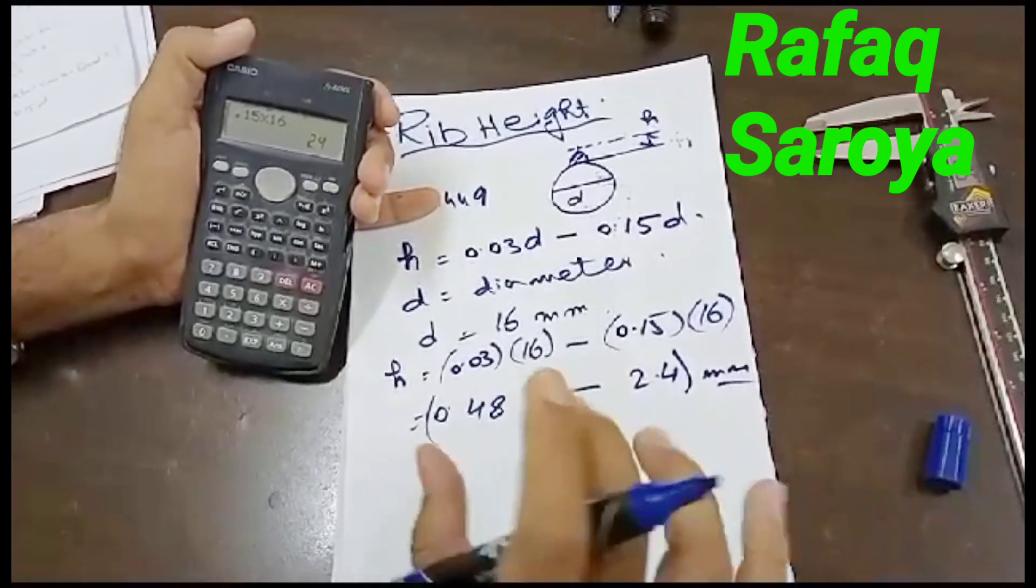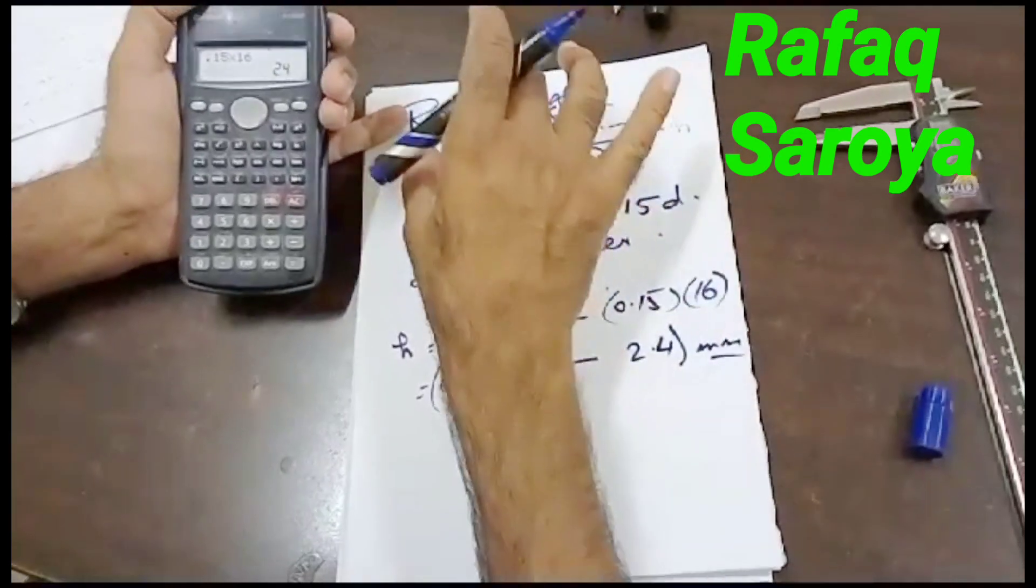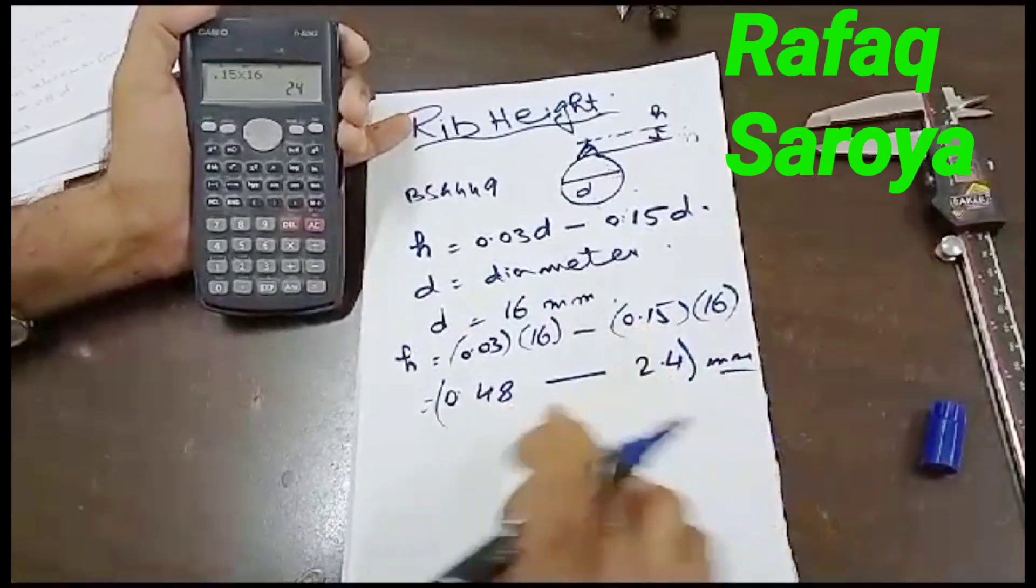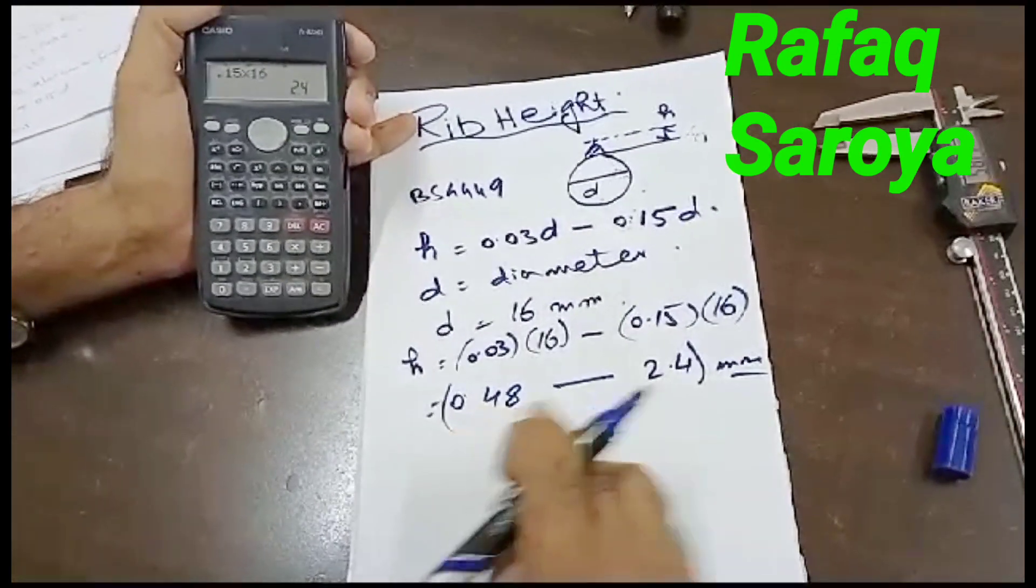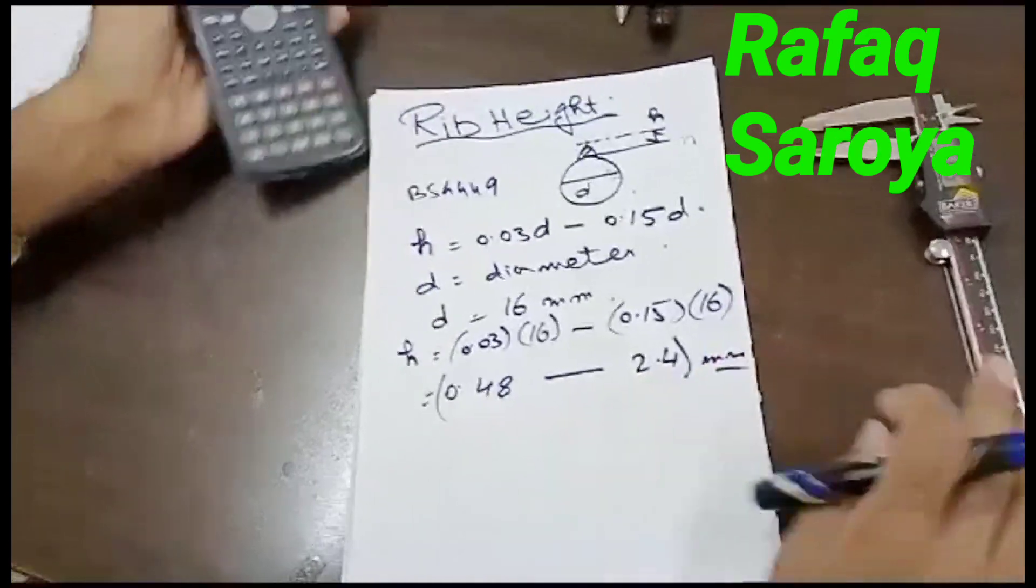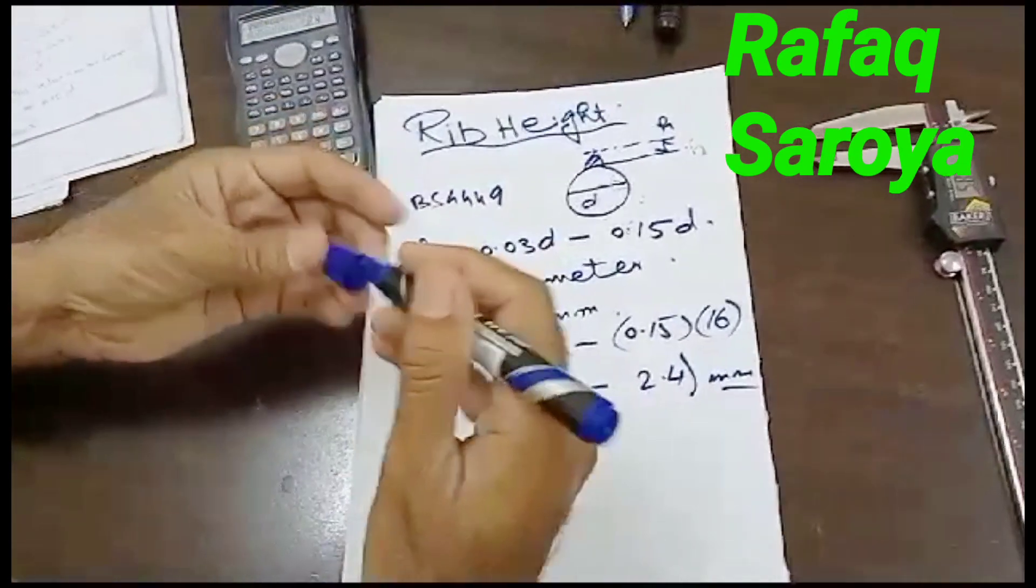So this thing shows that the height of this rib will be minimum 0.48 and maximum will be up to 2.4mm. Now I will give you one example over here.